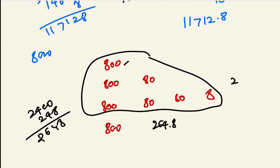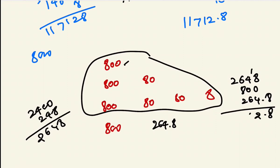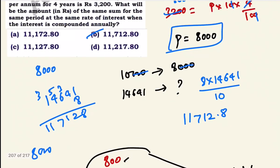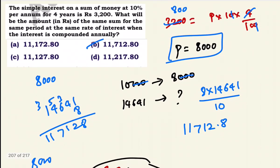Compound interest step is Rs.264.8 each year cumulatively. Total compound interest over 4 years is Rs.3,712.80. Adding to principal Rs.8,000 gives total amount Rs.11,712.80.